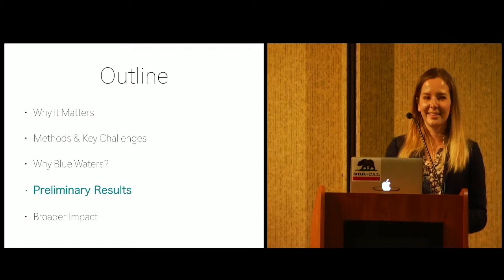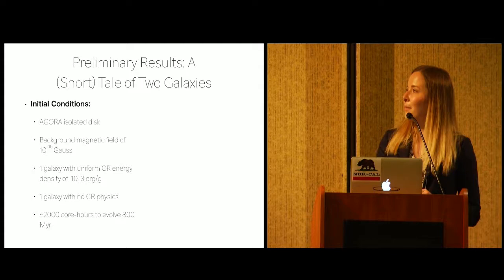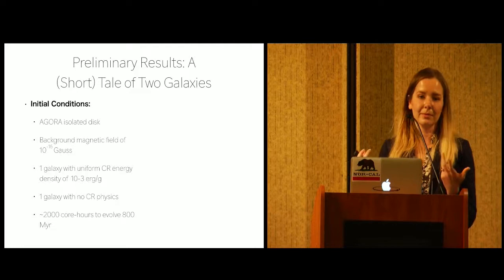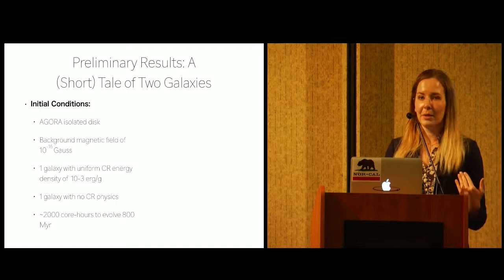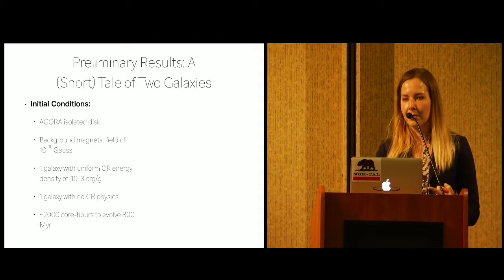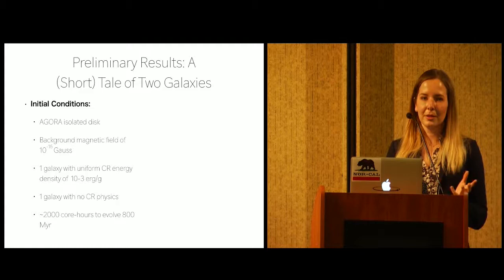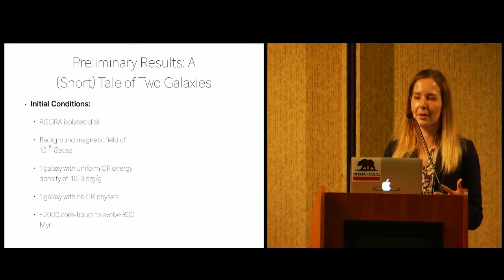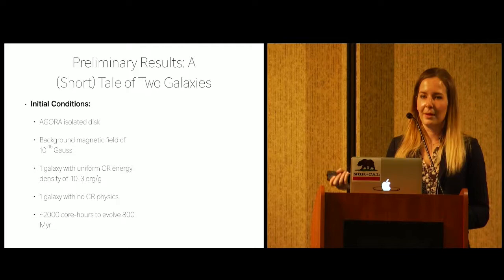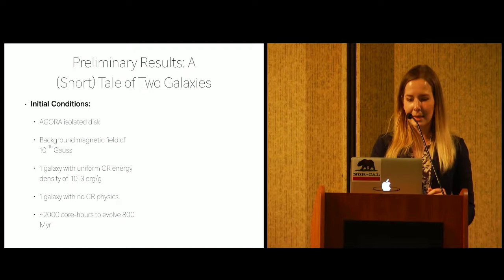Now, the fun part is some preliminary results. And I emphasize the word preliminary. This is very recent work. I just got this working. So in the interest of time, I decided to show two isolated disk galaxies that follow the Agora initial condition prescriptions with two changes. One is that they have a blanket background magnetic field of 10 to the negative 16 gauss. And then one galaxy has a background uniform cosmic ray energy density of 10 to the negative 3 ergs per gram. And one galaxy just has no cosmic ray physics. And so these were evolved for 800 million years, and that took about 2,000 core hours. I use such a low value for the cosmic rays because, as I mentioned earlier, once the cosmic ray pressure reaches gas pressure, it takes a long time to run. And this actually shows, the results are still meaningful, but this is a fast way at showing some results.